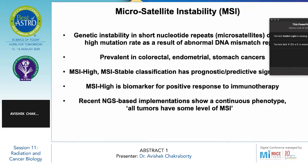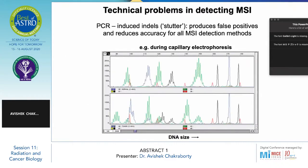Recent NGS-based implementations show a continuous phenotype — that all tumors have some level of microsatellite instability. Coming to technical problems in detecting microsatellite instability: the polymerase chain reaction induces insertions and deletions in the genome, producing false positive results and reducing accuracy for all microsatellite detection methods.